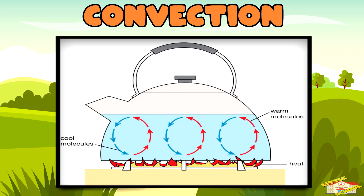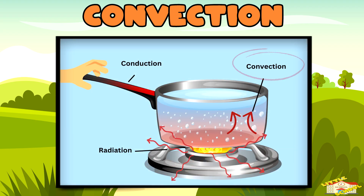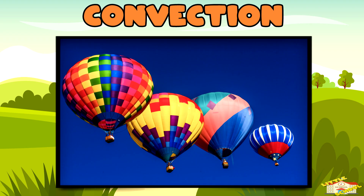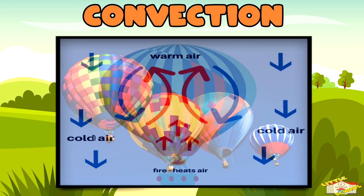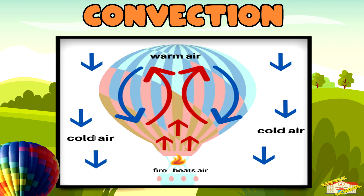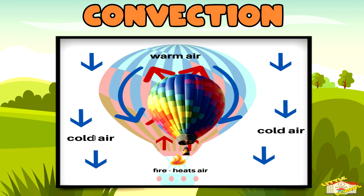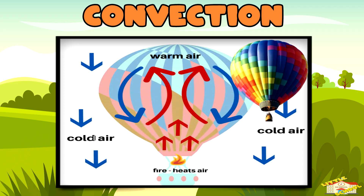This movement creates a loop, spreading the heat around — that's convection. An example of this would be the hot air balloon: the air inside the balloon is heated, making it rise and float.